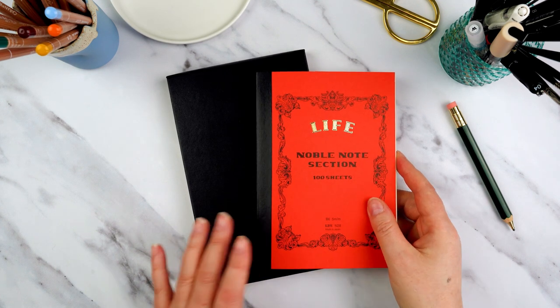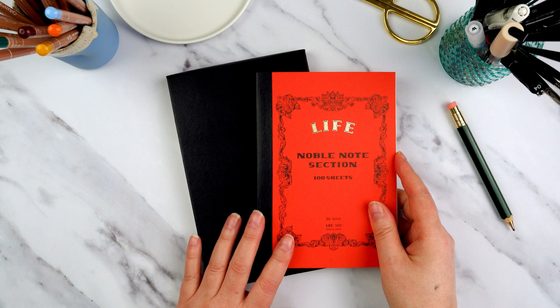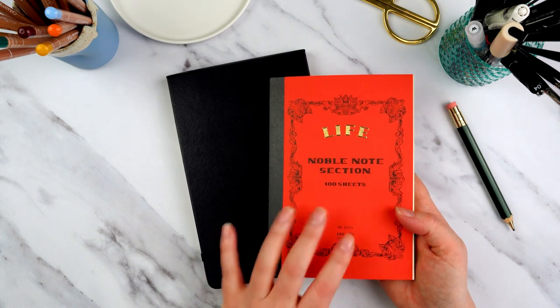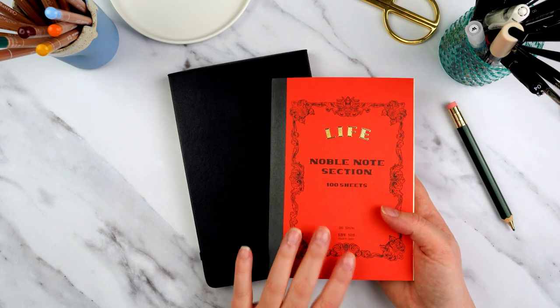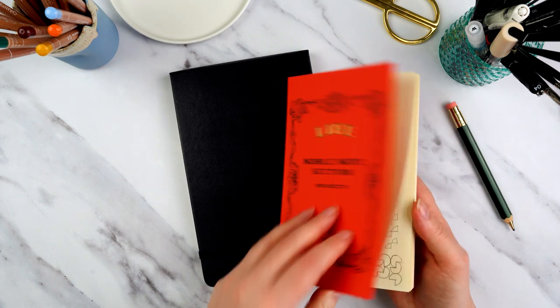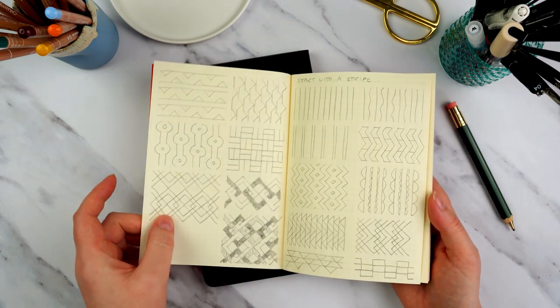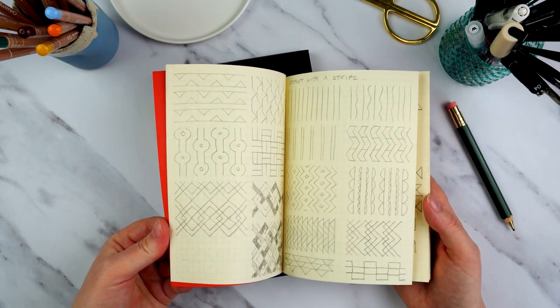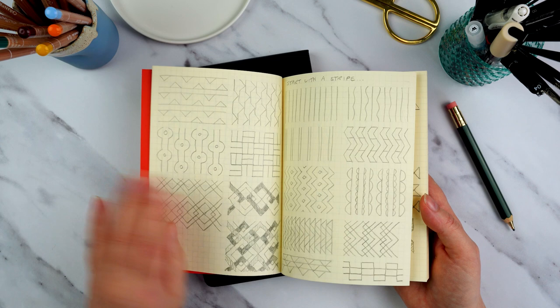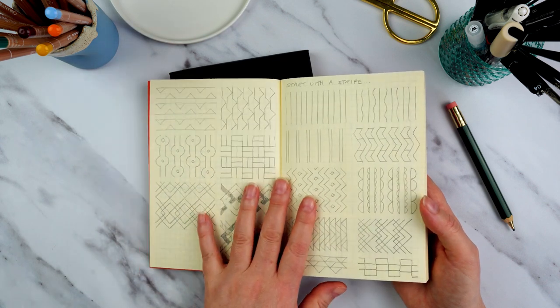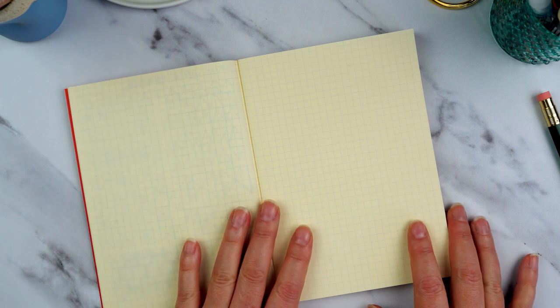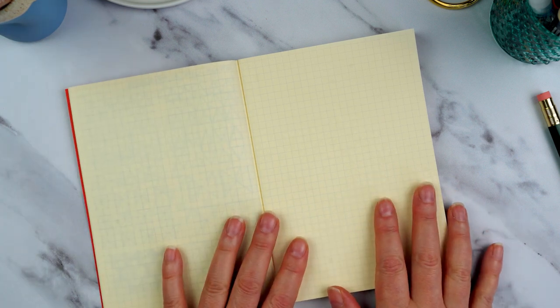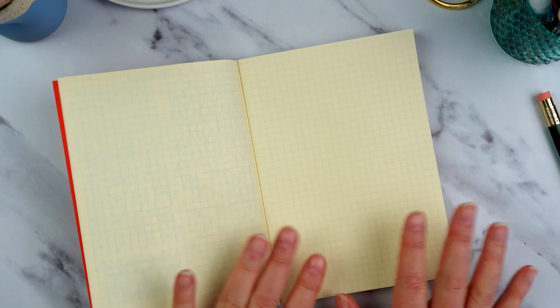Today I'm going to be working on some simple patterns based on geometric shapes. So I've decided that this notebook that I got in London is going to be my pattern design resource notebook, and I've already started filling a few pages with different pattern ideas like these. So these are all just things that are generated from using very simple shapes.